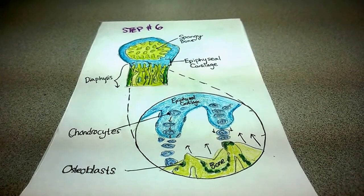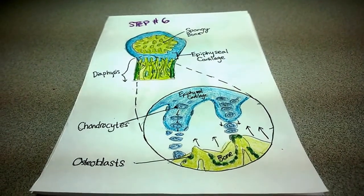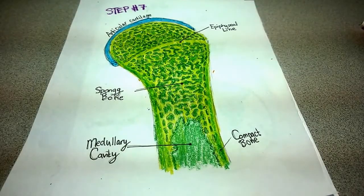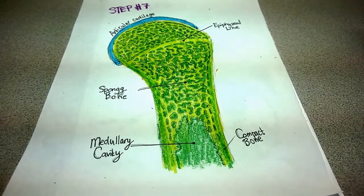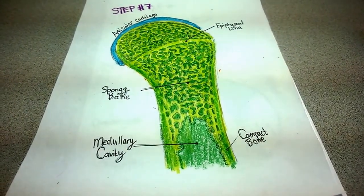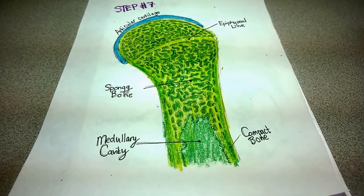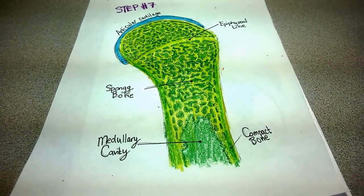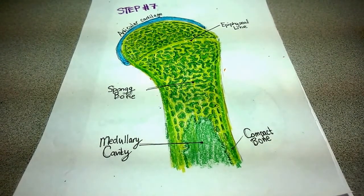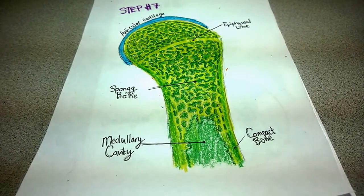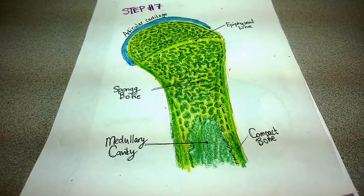Step number seven: At puberty, the epiphyseal cartilage slows down production of its cells. This allows the osteoblasts to begin gaining ground. When osteoblasts convert all of the cells of the cartilage to bone, the bone is done growing. Where the last bit of cartilage was converted and where the bone eventually became one solid mass is called the epiphyseal line. It is visible on adult x-rays.